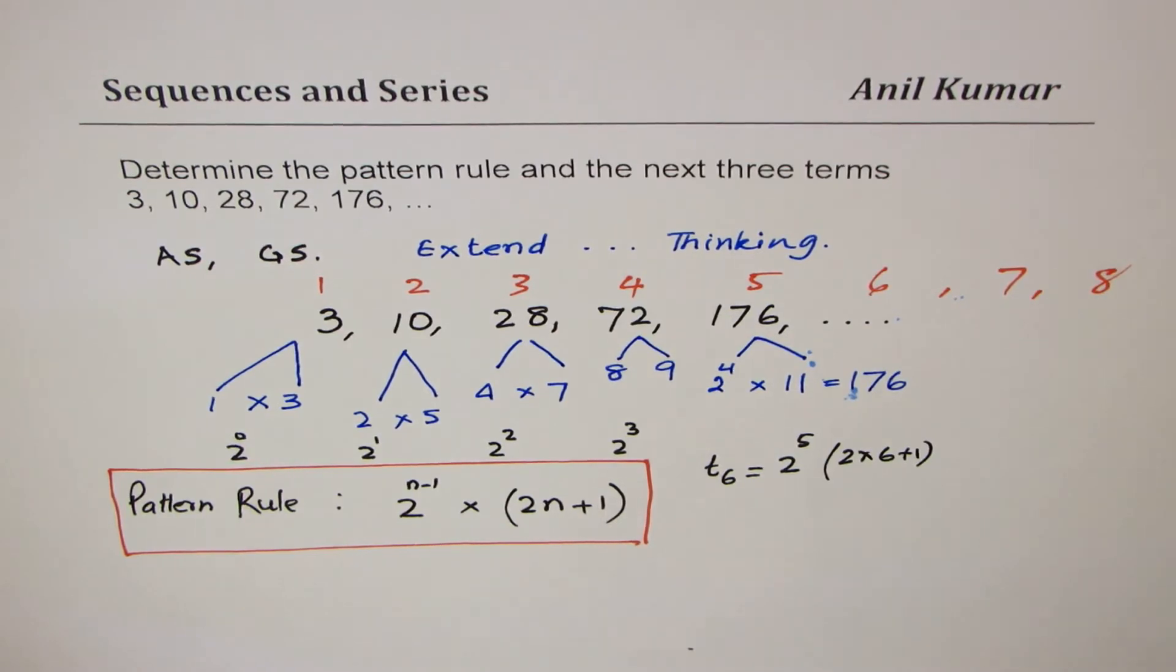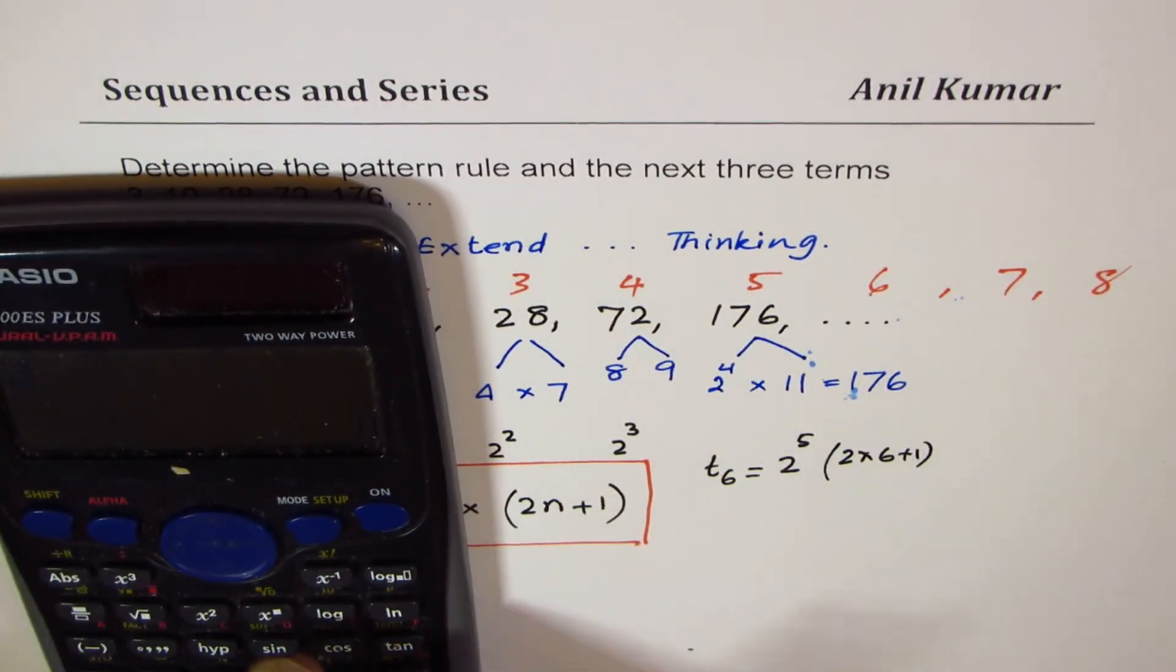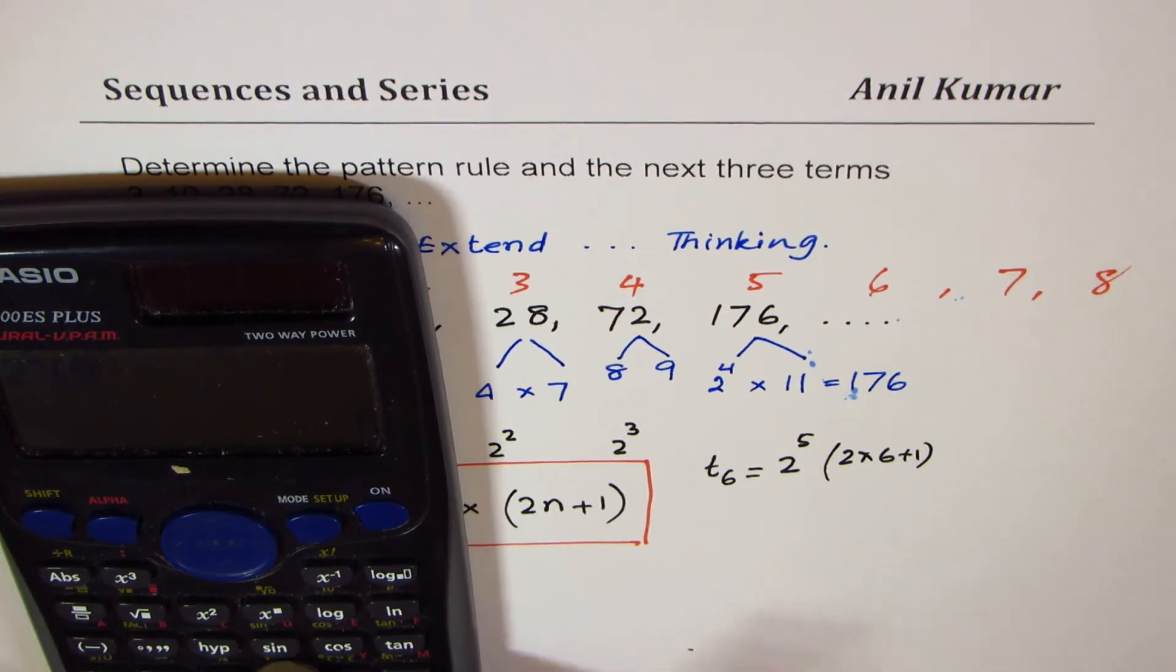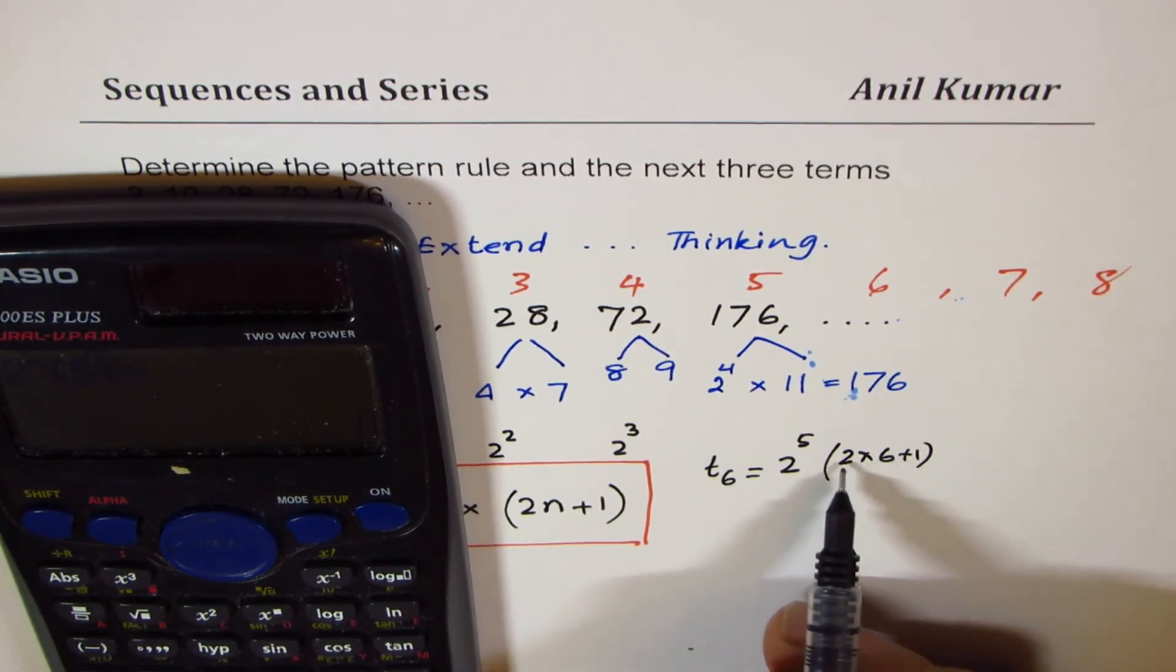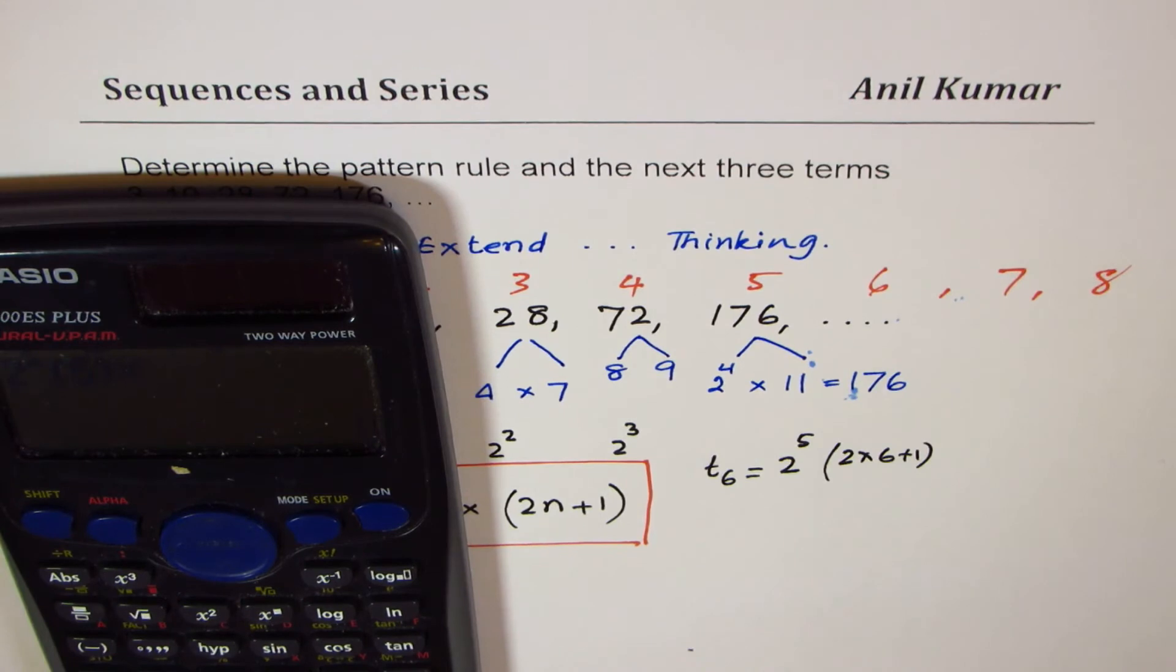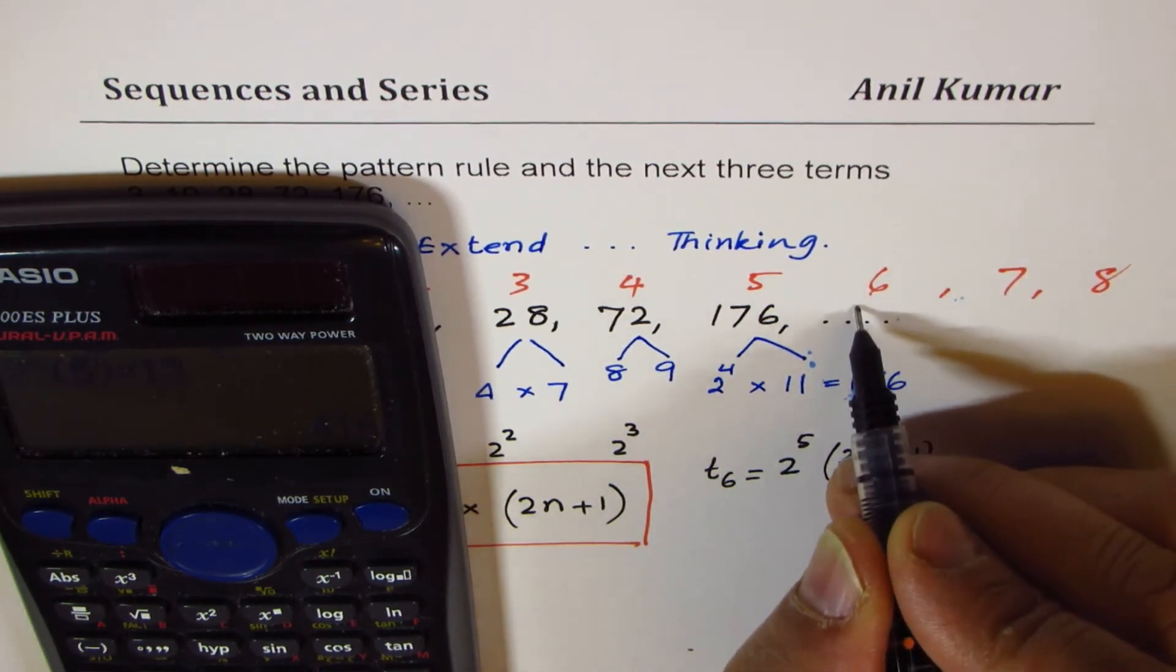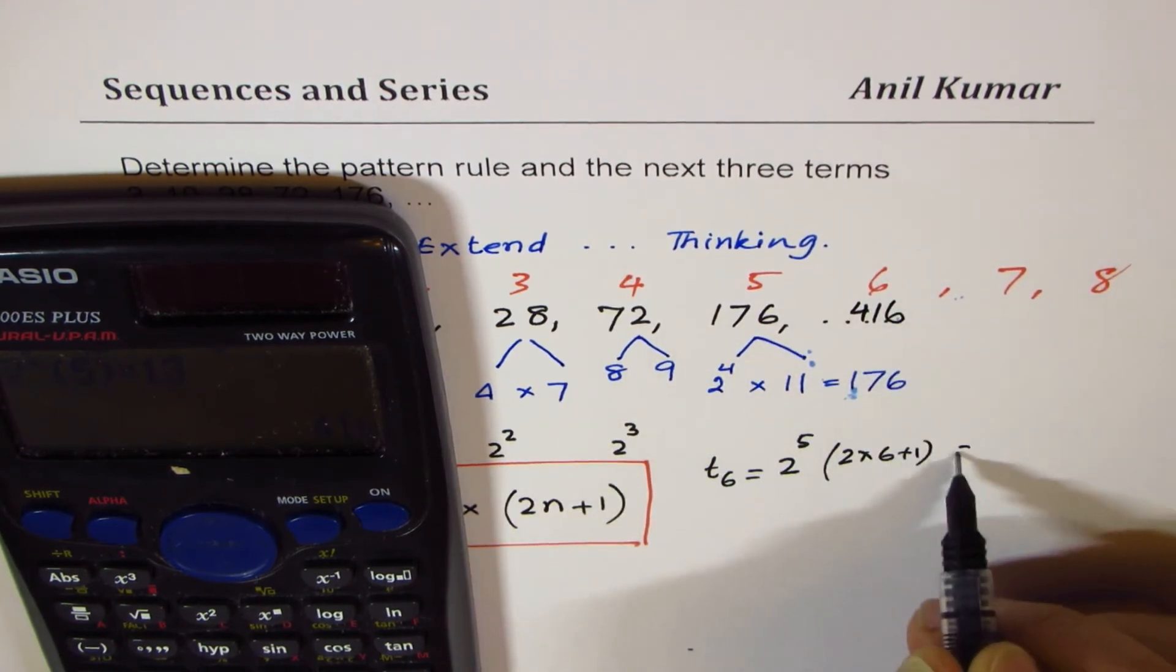So we have 2 to the power of 5 times 12 plus 1, 13, times 13, which is equal to 416. So we get 416 here. Let me write 416.